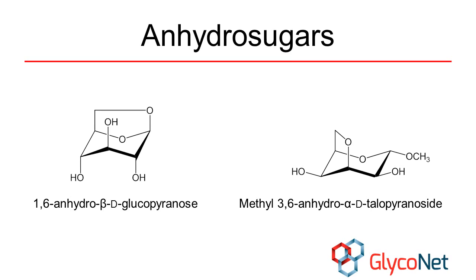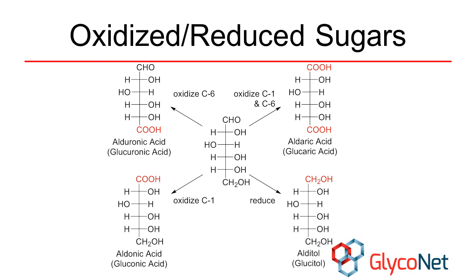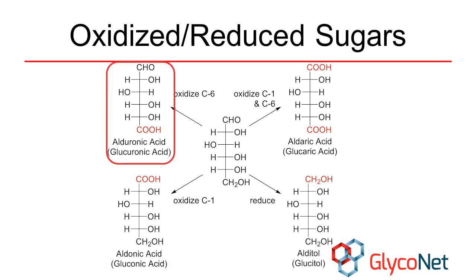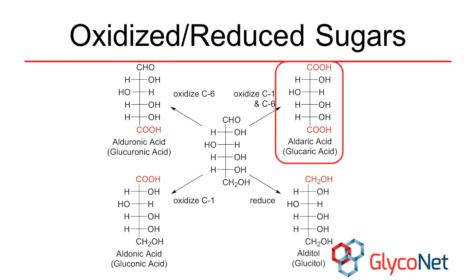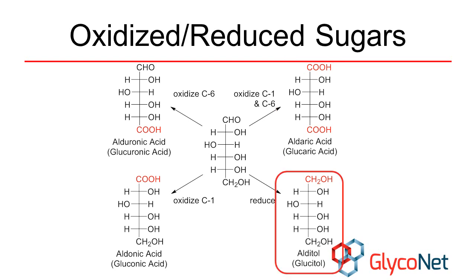Anhydrosugars are formed through the loss of water between two alcohols. In naming these sugars, we indicate the position of the alcohols involved, and then add "anhydro" in front of the name. Oxidized and reduced sugars have additional naming conventions, and we will cycle through these molecules beginning on the bottom left of this diagram. If the aldehyde of an aldose is oxidized to a carboxylic acid, the resulting sugar is called an aldonic acid. Oxidation of the C6 alcohol to a carboxylic acid will create an aldaronic acid. If both carbons 1 and 6 are oxidized, an aldaric acid is formed. Lastly, alditols are the products of the reduction of the C1 carbonyl group to an alcohol.